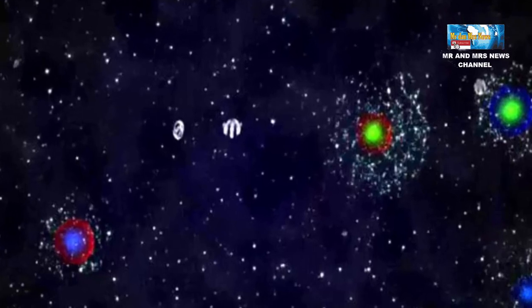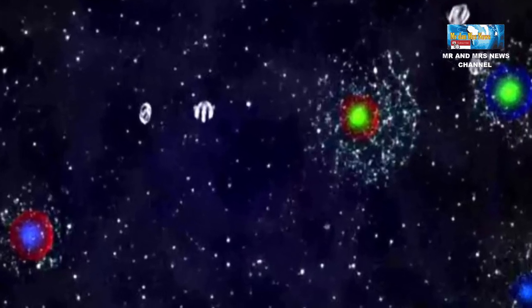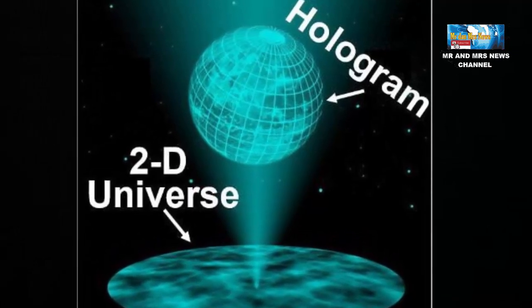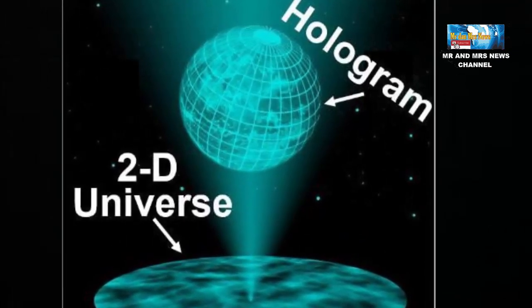Secara umum, kedua teori ini disebut menggambarkan dimensi yang berbeda. Gravitasi menggambarkan cakupan tiga dimensi, sedangkan teori partikel hanya tertidik dari dua dimensi.